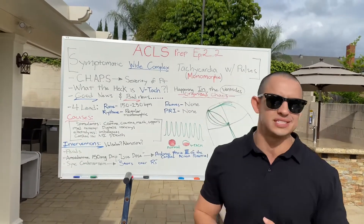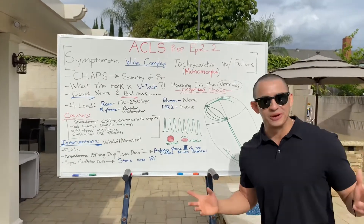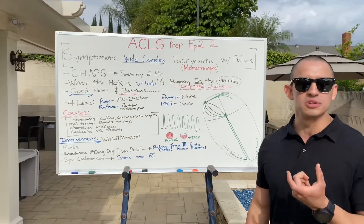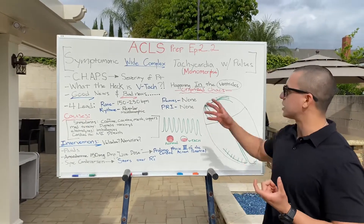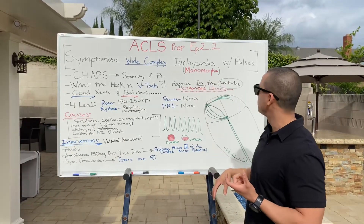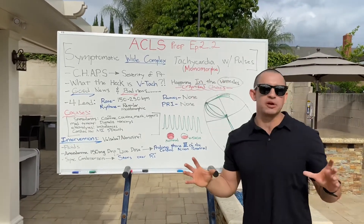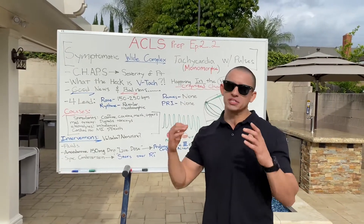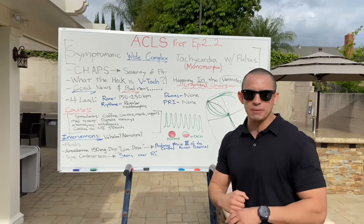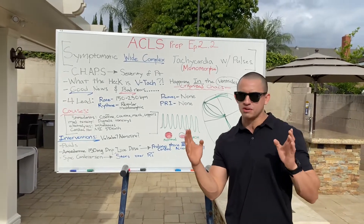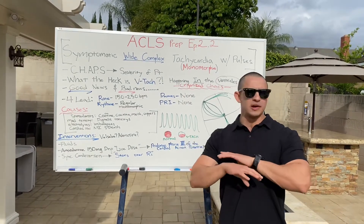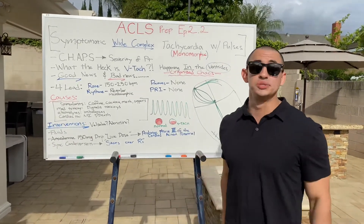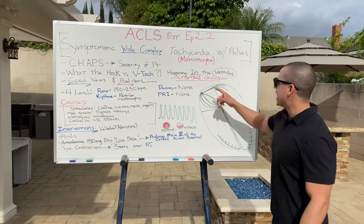Wide complex: I'm not talking about the PR interval, the ST segment, or the J point. I'm talking about the QRS complex — that ventricular depolarization. And tachycardia is generally a heart rate over 100, but in this case the patient is firing so fast the heart rate is between 150 to 250 — a rate not sufficient to sustain life.